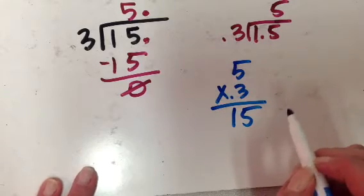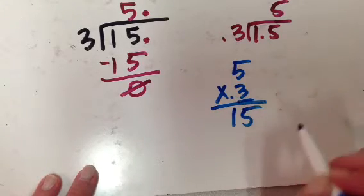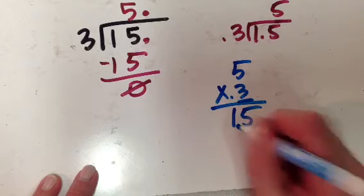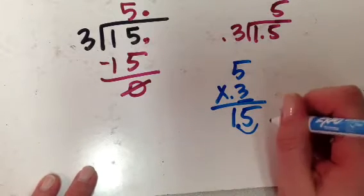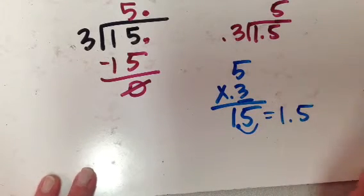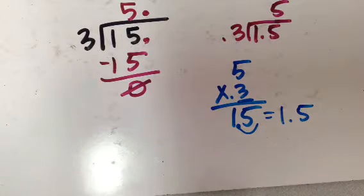I know that 5 times 3 is 15, and I have one number behind the decimal point, so I'm going to move my decimal point right there, so my answer is 1.5, so you can see that our math checks out there.